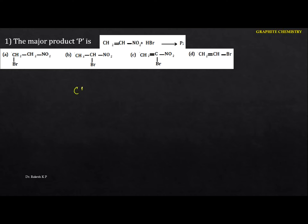So we are given CH2=CH with NO2 group, and this undergoes an addition reaction. In the first step, we get the formation of the electrophile, that is H+ and Br−.